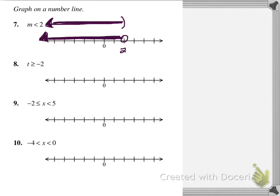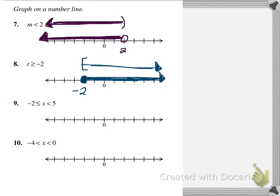For x greater than or equal to negative 2: since it includes 'equal to,' if using circle notation, we draw a filled-in circle at negative 2 and shade to the right. If using bracket notation, we use a squared-off bracket and shade to the right. Both methods mean the same thing — they just differ depending on which course you're in.